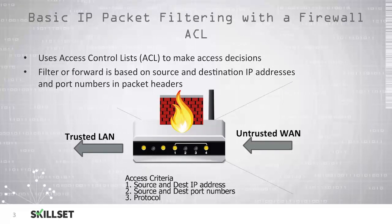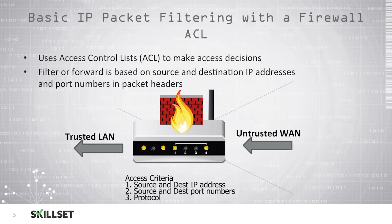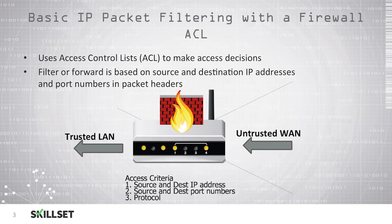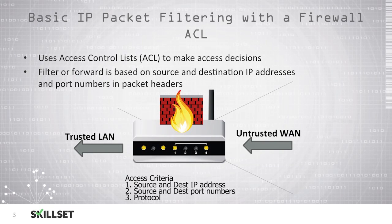It makes these decisions by looking at the source IP address and destination IP address, as well as the port numbers contained in the packet headers. These devices can also look at the protocol in use and determine whether or not it is permitted. Once the firewall reviews the traffic, it makes a decision to either forward the traffic on or block it.